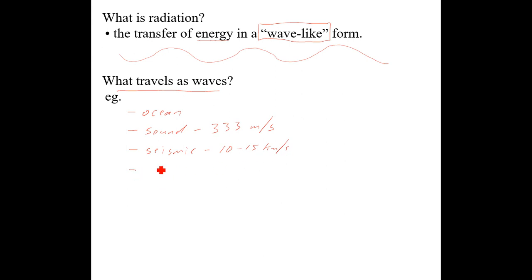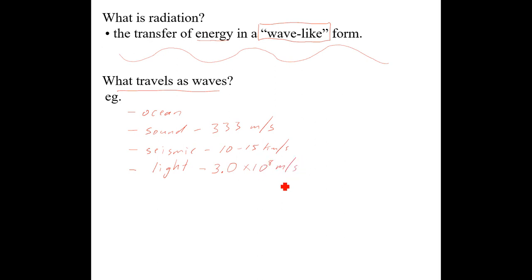What we're focusing on is light. Sometimes all electromagnetic radiation is referred to as light, but visible light is just a very small portion of the electromagnetic spectrum. Light, along with all parts of electromagnetic radiation, travels at the same speed in a vacuum: 3.0 times 10 to the 8 meters per second — much, much faster than any of the previous waves mentioned.